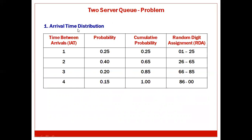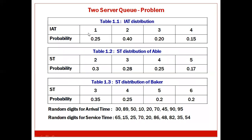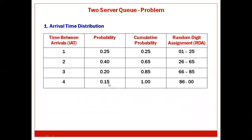The first table we generate is the arrival time distribution. We need IAT, probability, cumulative probability, and RDA. The IAT values are 1, 2, 3, 4 with given probabilities. Cumulative probabilities are 0.25, 0.65, 0.85, and 1.00. Random digit assignment: 1–25 for IAT=1, 26–65 for IAT=2, 66–85 for IAT=3, and 86–00 for IAT=4.